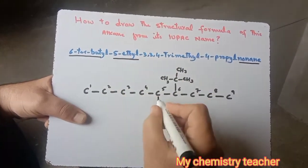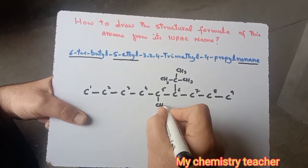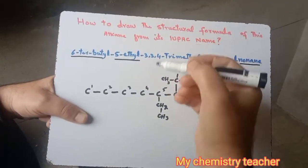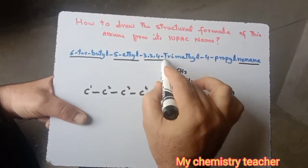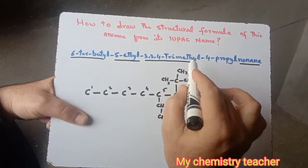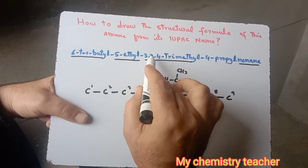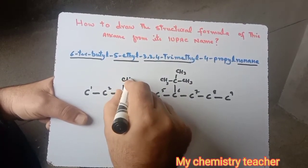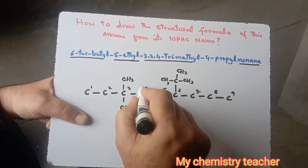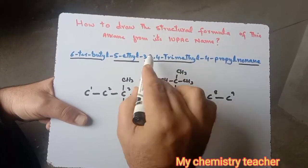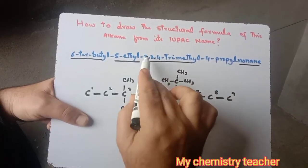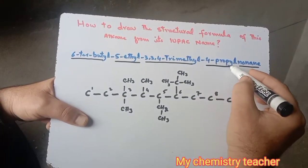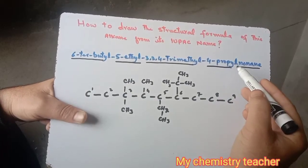We place the ethyl group as CH₂CH₃ — again, either above or below the chain. Next we have trimethyl: three methyl groups. Two are located on carbon number three, so we put one methyl here and the other methyl here. The remaining methyl is on carbon number four, giving us a total of three methyl groups — two on C3 and one on C4.